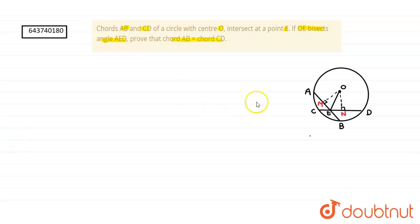For solving this question, we have drawn OM and ON perpendicular to AB and CD respectively. So we have to draw OM perpendicular to AB and ON perpendicular to CD.